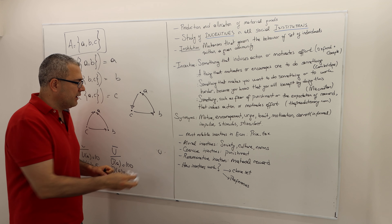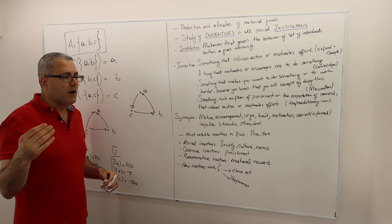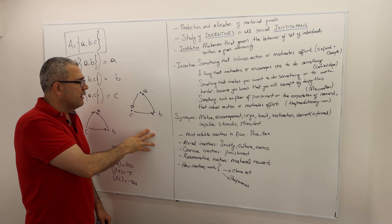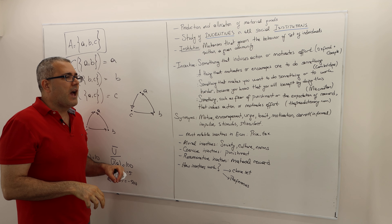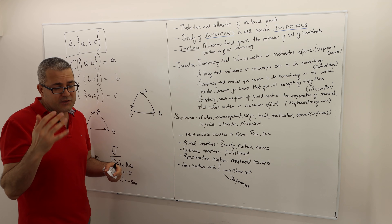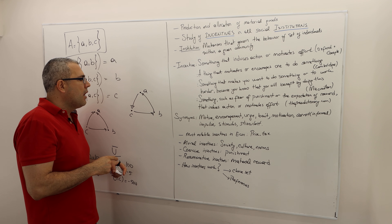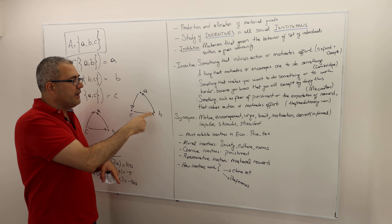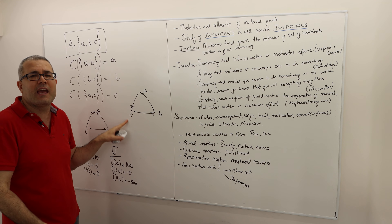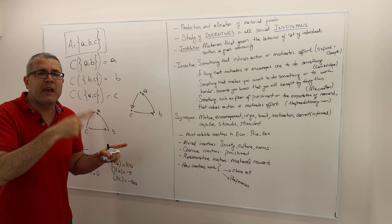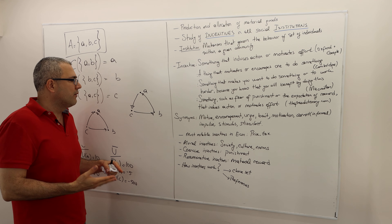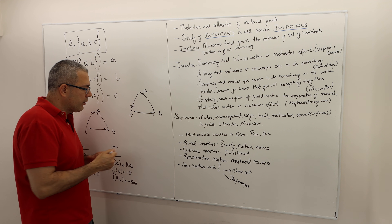Ariel Rubinstein's lecture notes offer a nice illustration: imagine a monkey in a jungle choosing between three trees to sleep in. He starts at b, sees a and jumps to a, then sees c and jumps to c, then sees b and jumps back, then a again, then c again — spending the entire night jumping between trees. This is clearly not good for survival.